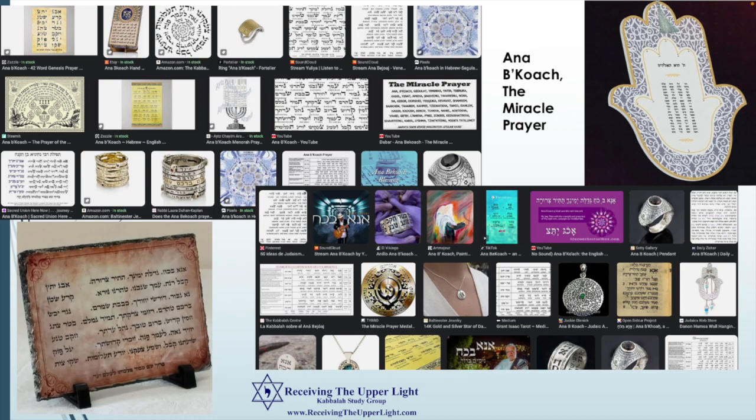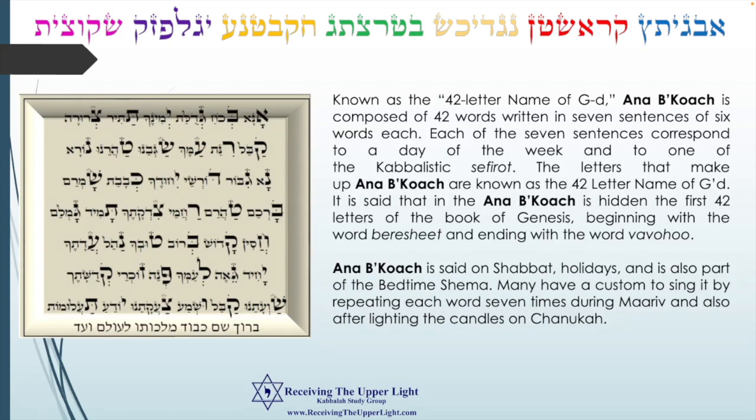The Ana B'Koach is known as the 42-letter name of God as well. It is composed of 42 words written in seven sentences of six words each. Each of the seven sentences corresponds to a day of the week and to one of the Kabbalistic sefirot. The letters that make up the Ana B'Koach — specifically the first letters of each word — are known as the 42-letter names of God.